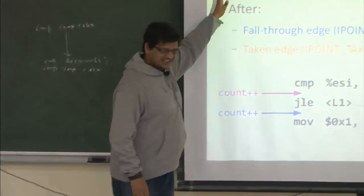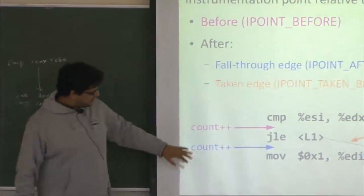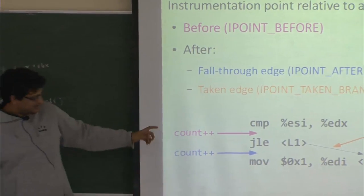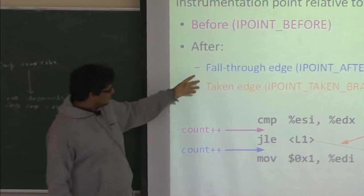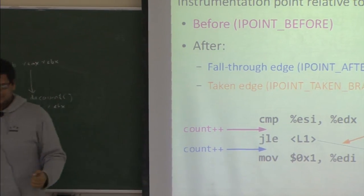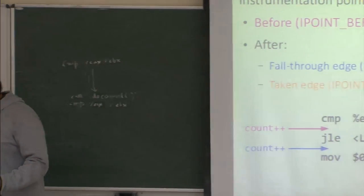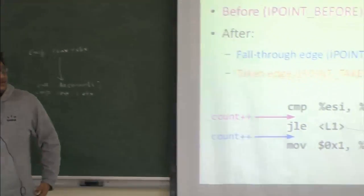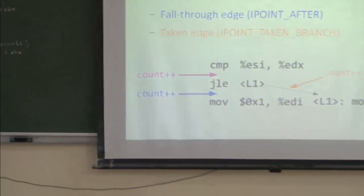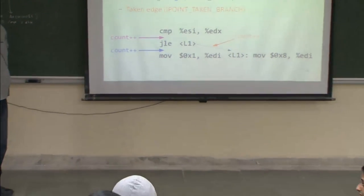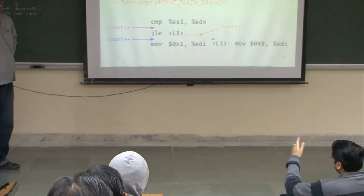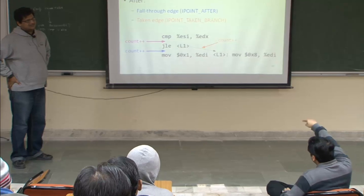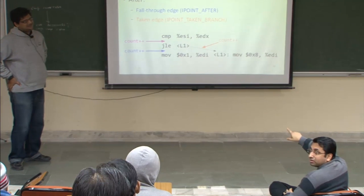Most of the time we use IPOINT_BEFORE. For branch-related study we may need to use both IPOINT_AFTER and IPOINT_TAKEN_BRANCH. For example, if you want to know how many times a branch takes the fall-through versus the taken path, these two instrumentation points are very important.